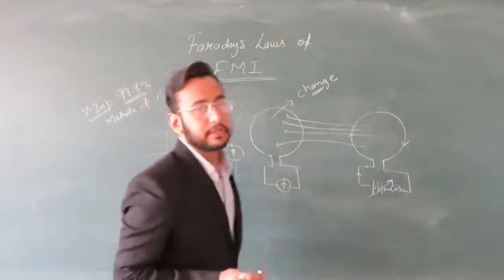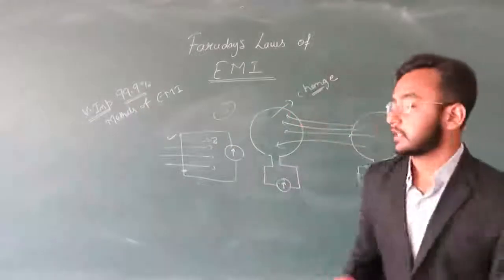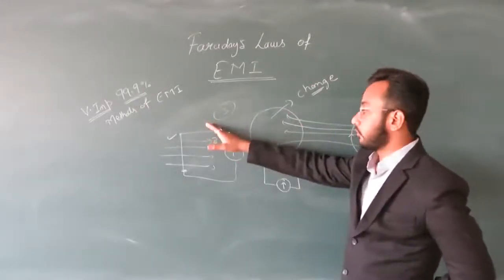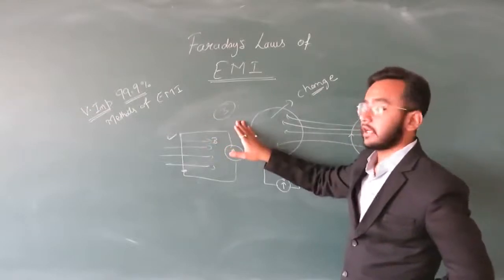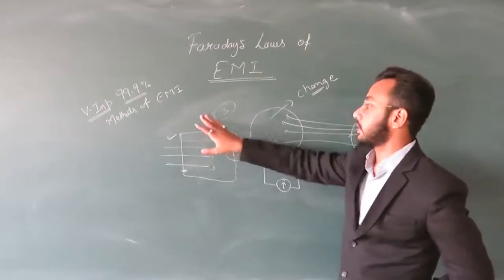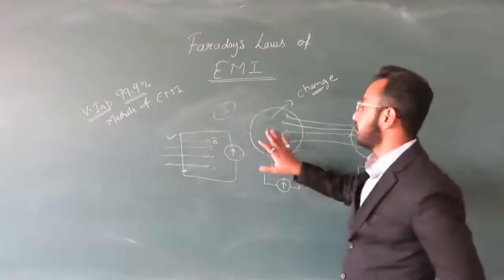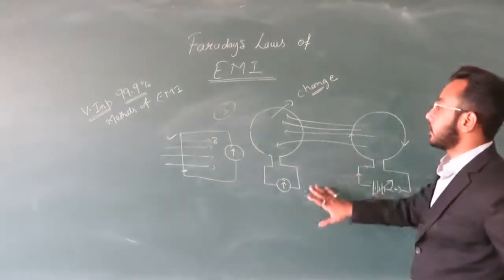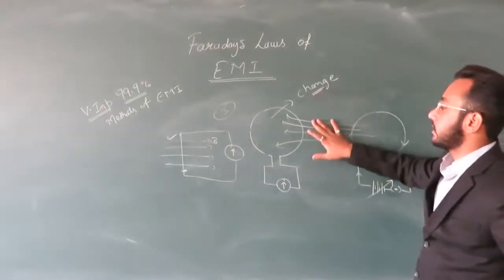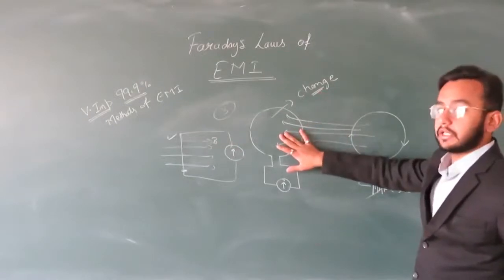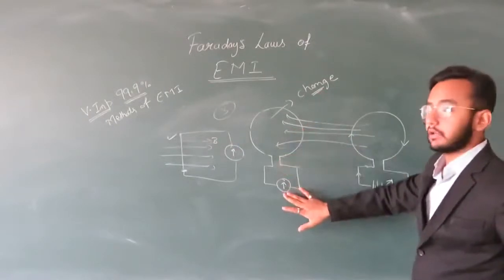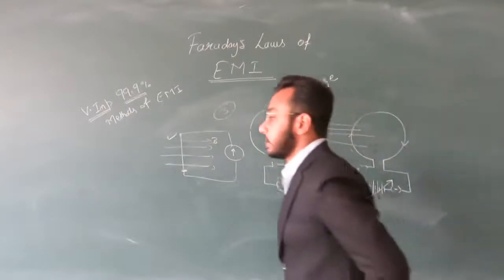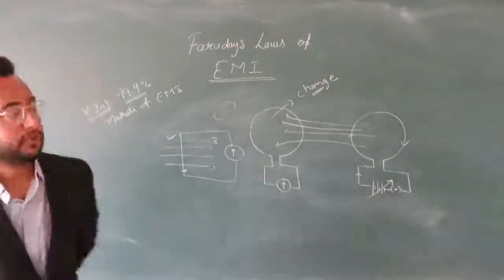The basic concept is this: we have three methods to induce current. We can fix the coil and move the magnet, fix the magnet and move the coil, or change the number of magnetic field lines by varying the current. This is the basic phenomenon and the most important part.